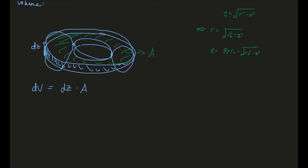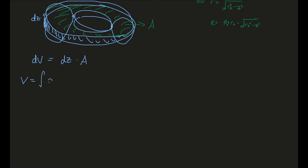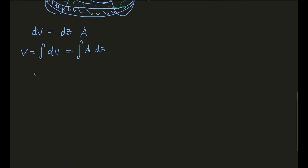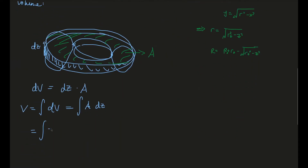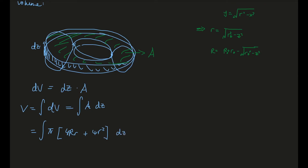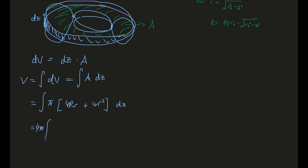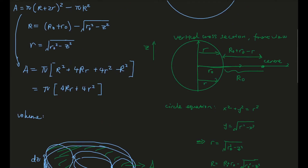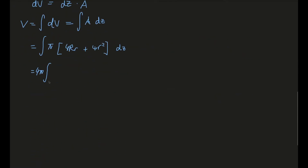So now we can do integration of annuli area from z equals negative R₀ to positive R₀. The function is an even function, therefore we can simplify it to two times the integral from zero to positive R₀.